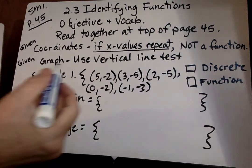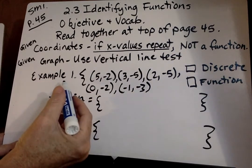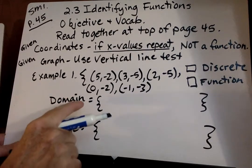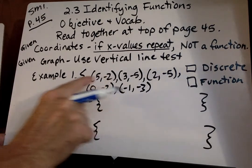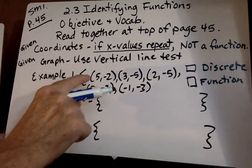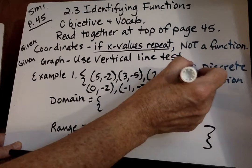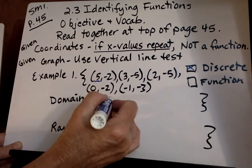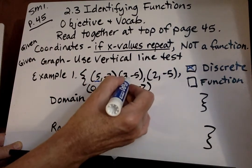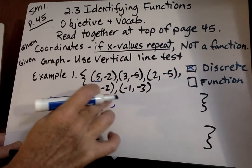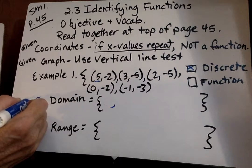So if we look at example one we see we have all these different points. So the domain are the x values. Is this discrete or continuous? Well since it's a set of points it has to be discrete. Now we have to find out whether it's a function or not a function. So we look at our x values. We have a 5. Oh and we're probably supposed to write these in order from least to greatest.